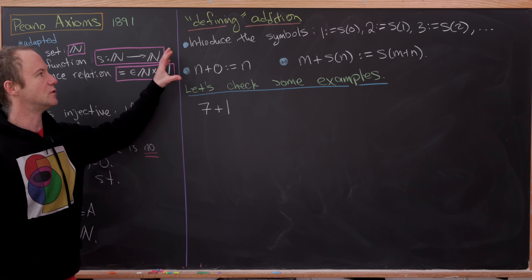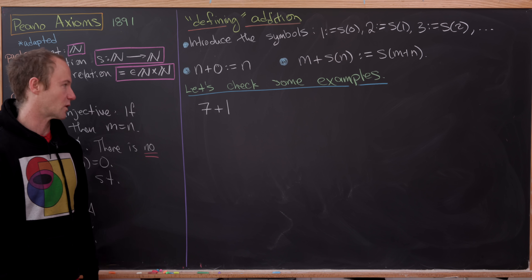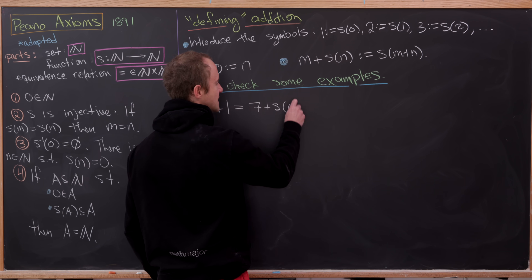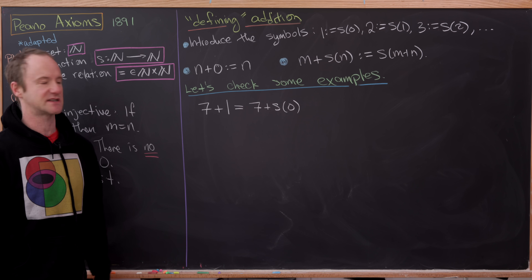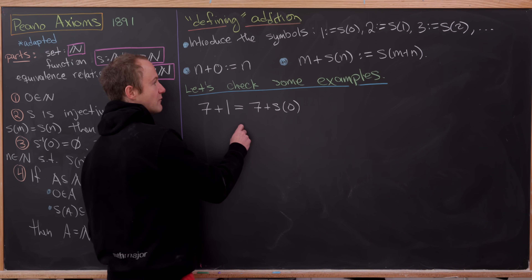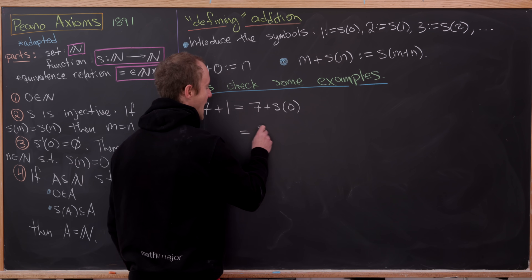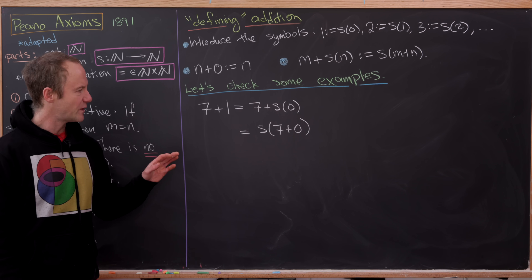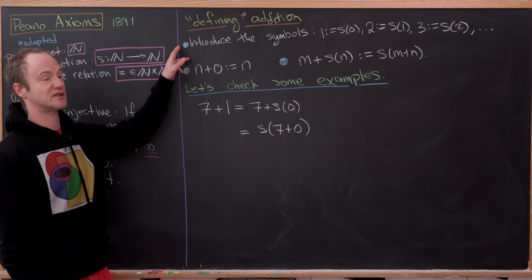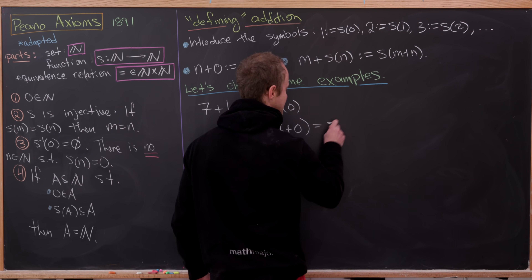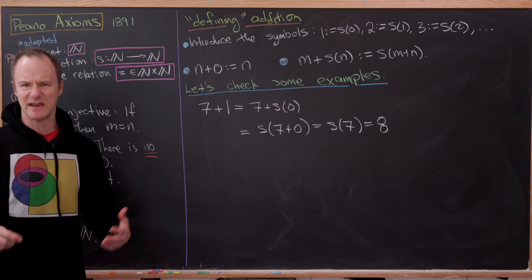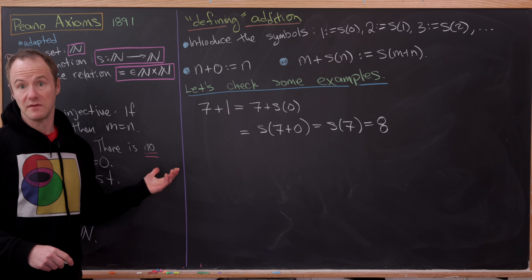Let's use only the defining properties of addition. We write 7 plus 1 as 7 plus S(0), since 1 is defined as S(0). By the recursive rule, that becomes S(7 plus 0). We know 7 plus 0 equals 7 by the first rule, so we get S(7), which we defined to be 8. Good — that works.